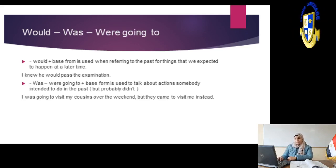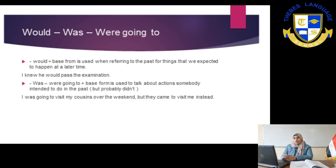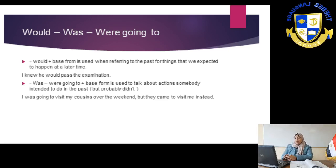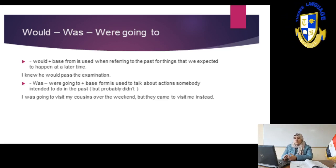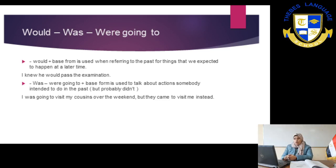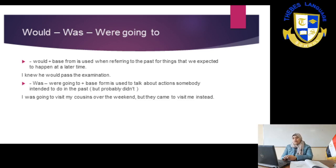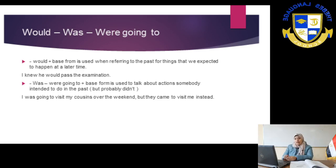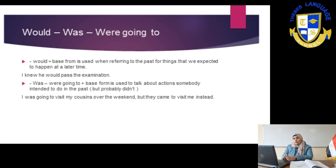We can also use 'would' or 'was/were going to.' We use 'would' plus infinitive when referring to past things or past expectations — things we expected to happen at a later time. For example: I knew he would pass the examination. With 'was/were going to' plus infinitive, we talk about actions that somebody intended to do in the past but probably didn't. For example: I was going to visit my cousins over the weekend, but they came to visit me instead. So if you intended to do something but didn't, use was/were going to plus infinitive.